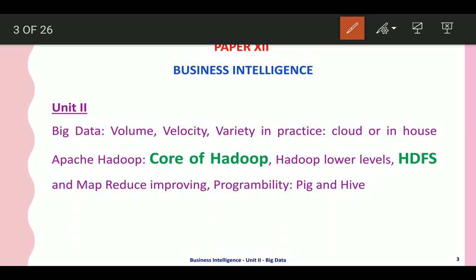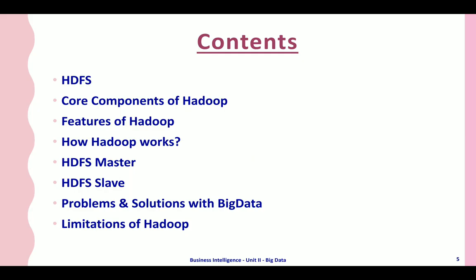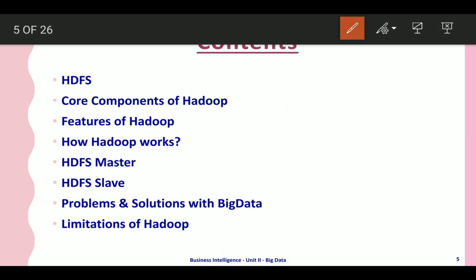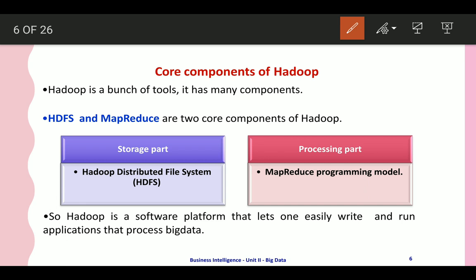Today we are going to see the core of Hadoop. The main core component is HDFS — Hadoop Distributed File System. Today's topics include: what is HDFS, core components of Hadoop, features of Hadoop, how Hadoop works, HDFS master, HDFS slave, and the problems and solutions associated with big data, as well as the limitations of Hadoop.